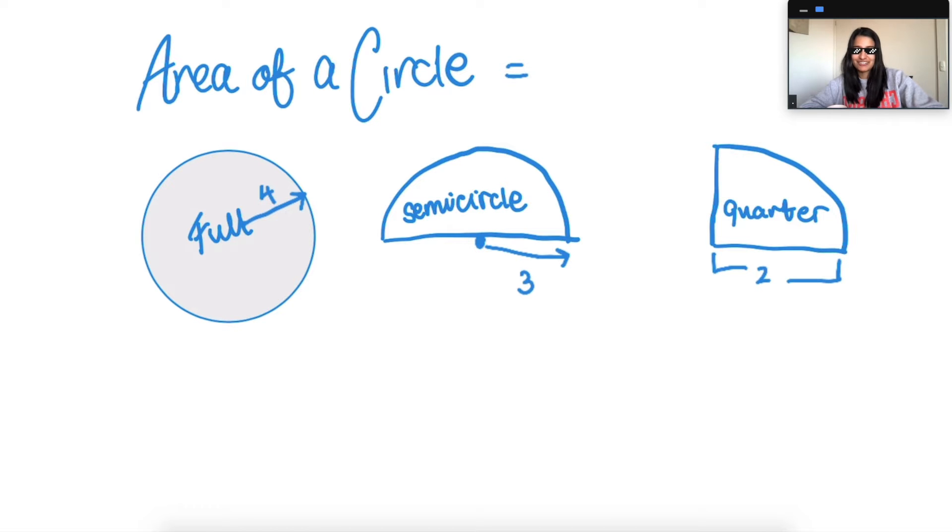The area of the circle is pi times r squared. Now for those who need a little bit of a recap...